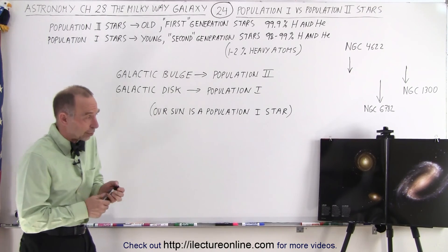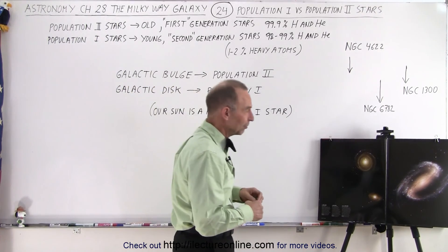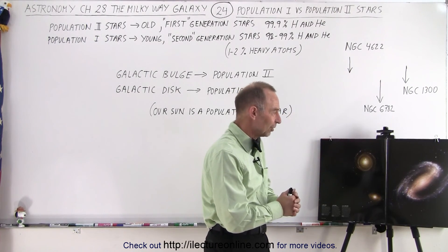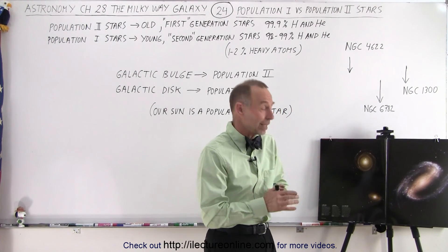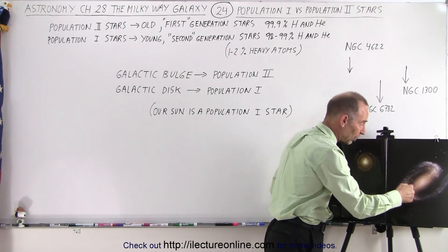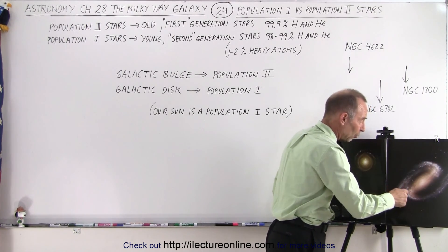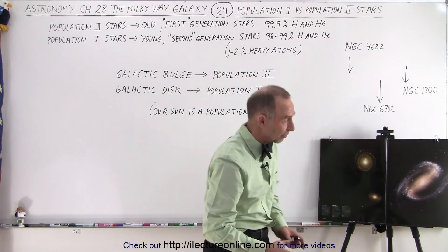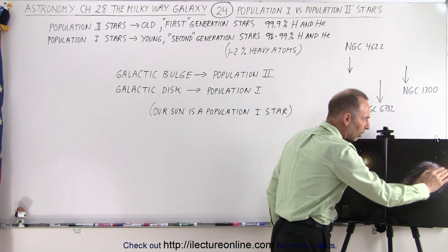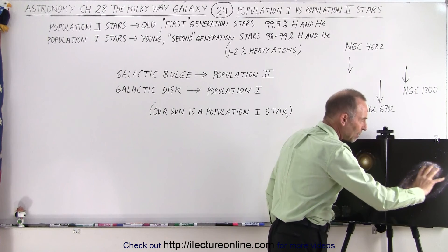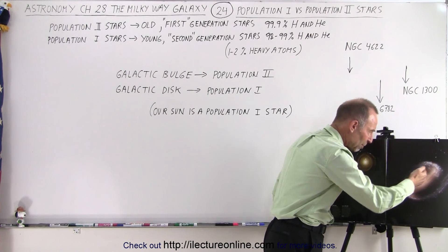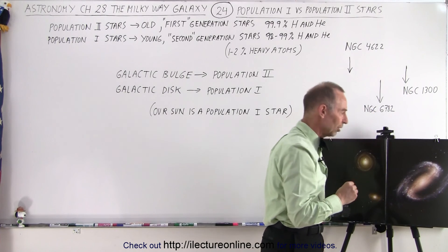If we take a look at this beautiful picture of NGC 1300, one of my favorite galaxies — it's a barred spiral galaxy. It has a very rectangular central bulge and two spiral arms, one coming from each end of that bar. Notice that the spiral arms tend to be much more of a bluish color, and the central portion tends to be much more of an orangey-reddish color.